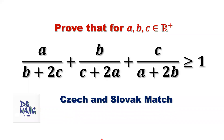Hello everyone, I'm Dr. Wen. Here is the question: Prove that if A, B, C are positive real numbers, then we have A over B plus 2C, plus B over C plus 2A, plus C over A plus 2B is bigger than or equal to 1. How do we prove this inequality?